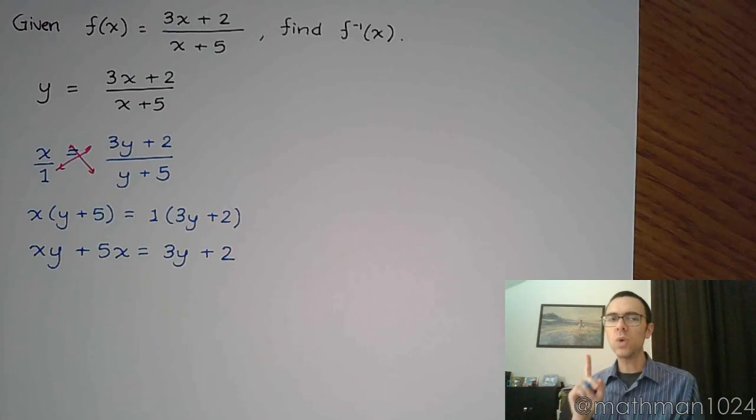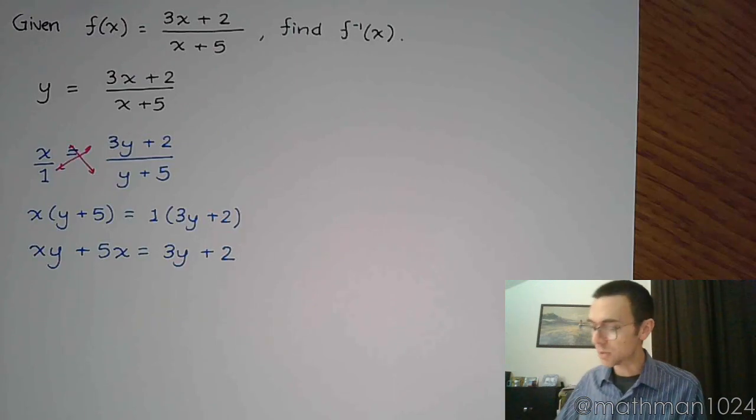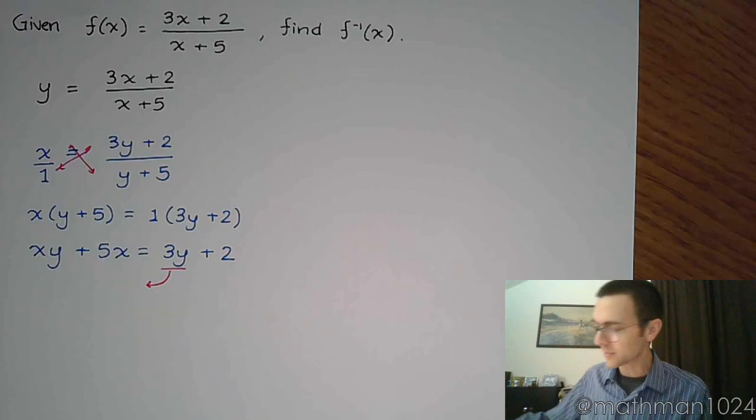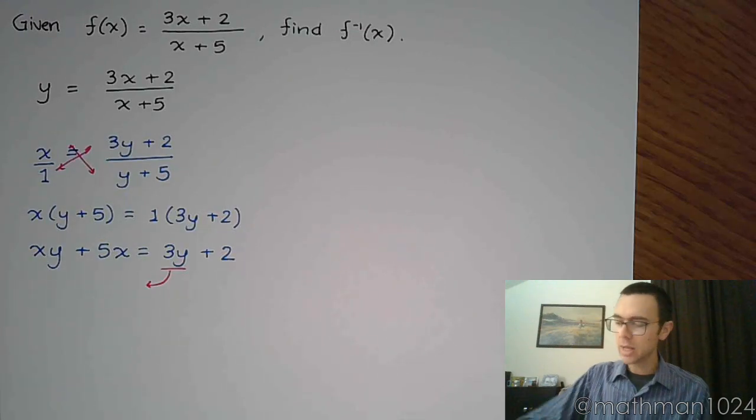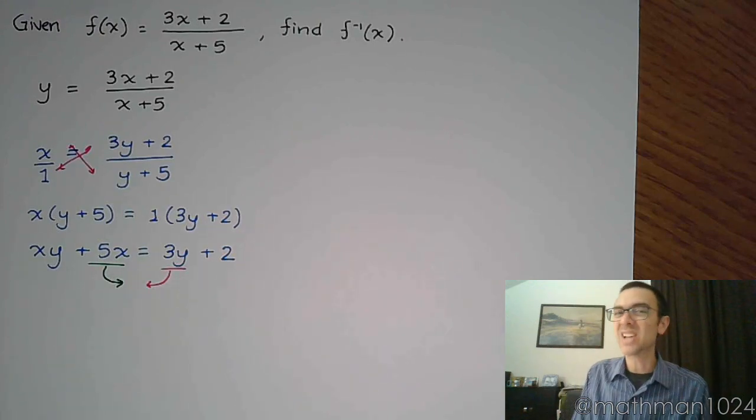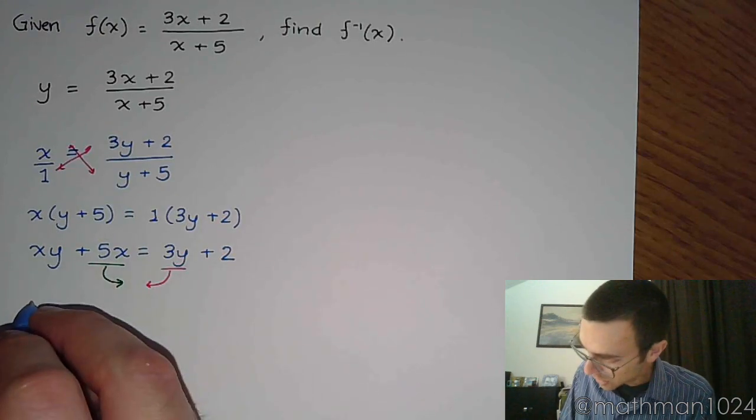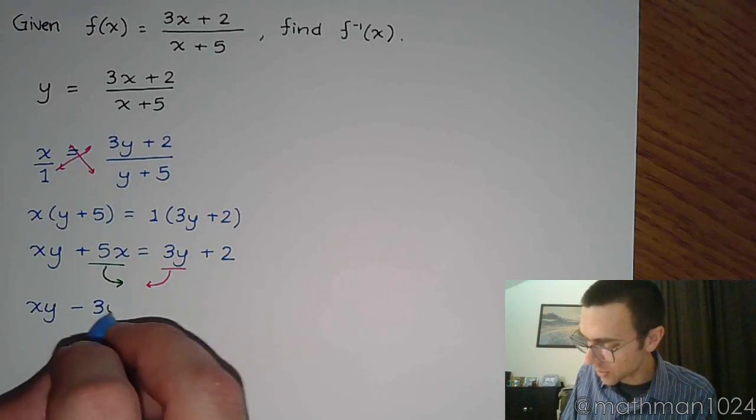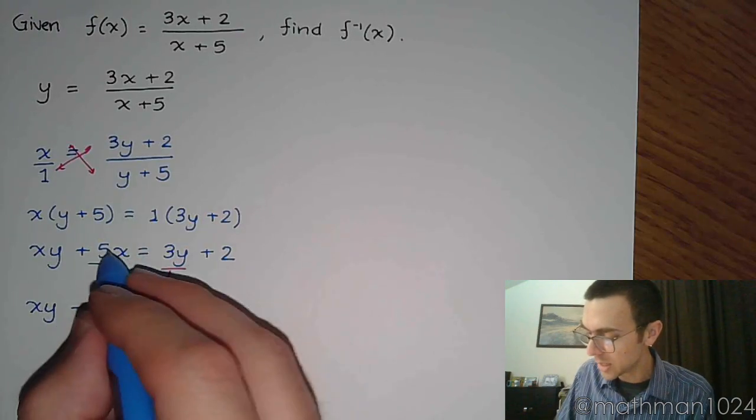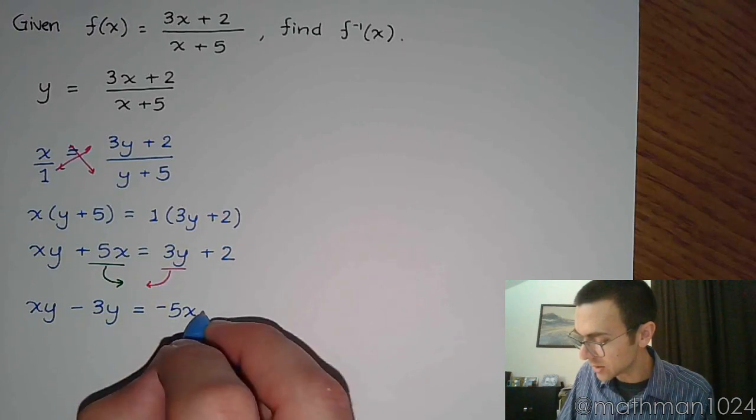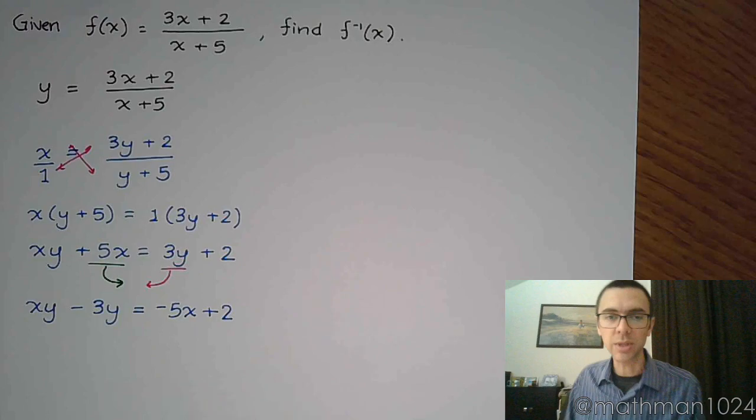Now what I just said is that everything that has y goes on one side. If you don't have y, you need to go to the other side, which means I'm going to move this 3y to the left to be with the other y's. But then this 5x needs to go to the other side, because he doesn't have a y. So this becomes xy - 3y, because we have to subtract it over there. Subtracting the 5x over here becomes -5x + 2.